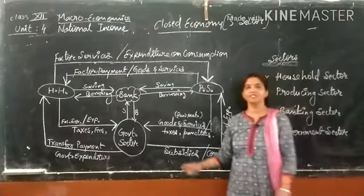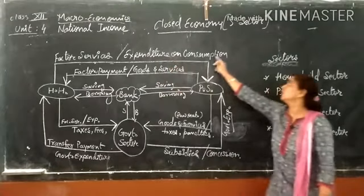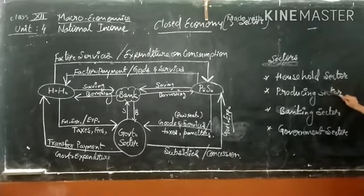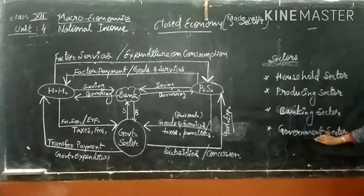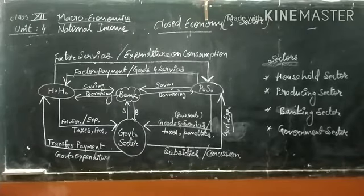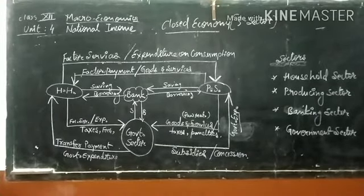Our next topic is the closed economy. In closed economy we have household sector, producing sector, and banking sector — these three sectors we already discussed in the simplest form of economy, the two sector economy. The important additional sector in closed economy is the government sector. The flow of income between household, producing, and banking sector remains the same as in two sector economy.